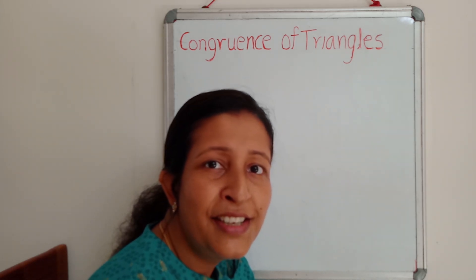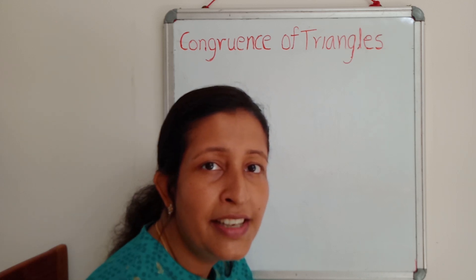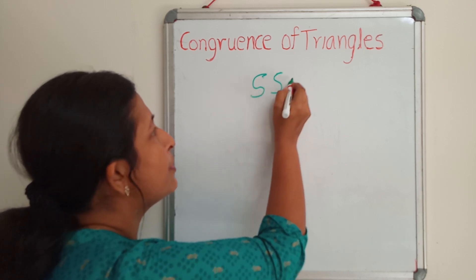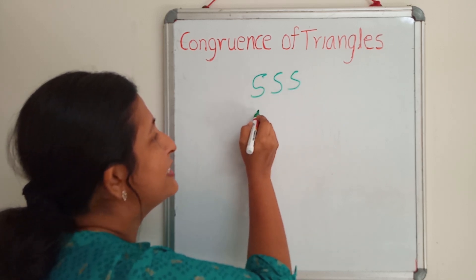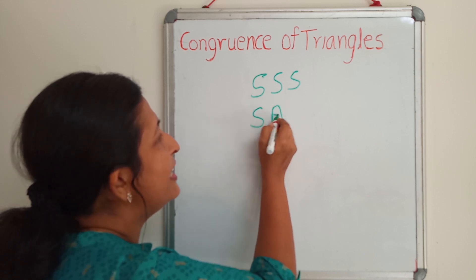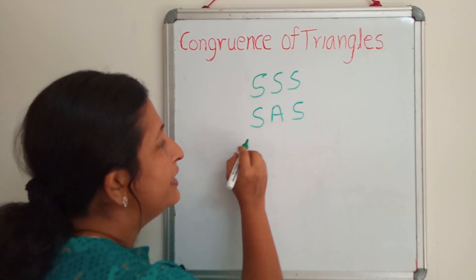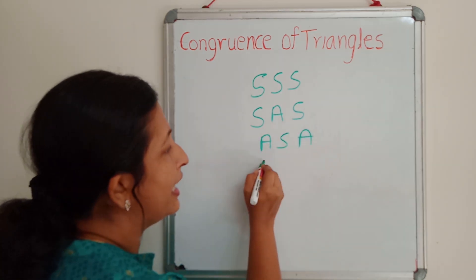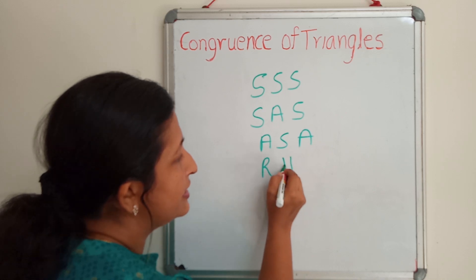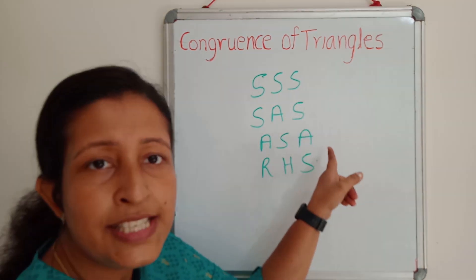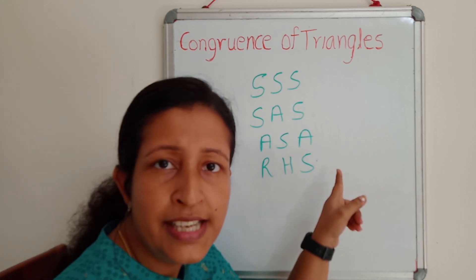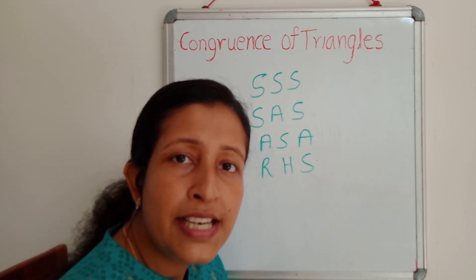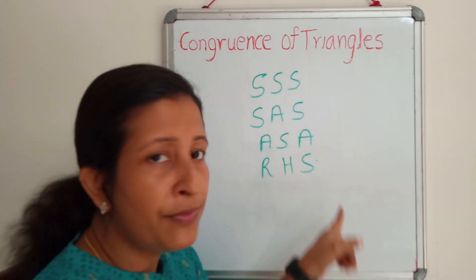Anybody can say the answer? What were the 4 criteria? The first one was SSS congruence criteria. The second one was SAS congruence criteria. Then the third one was ASA congruence criteria, and the last one was RHS congruence criteria. Based on these 4 criteria, we were discussing whether the triangles are congruent or not. Today we will discuss some more problems based on these 4 criteria.